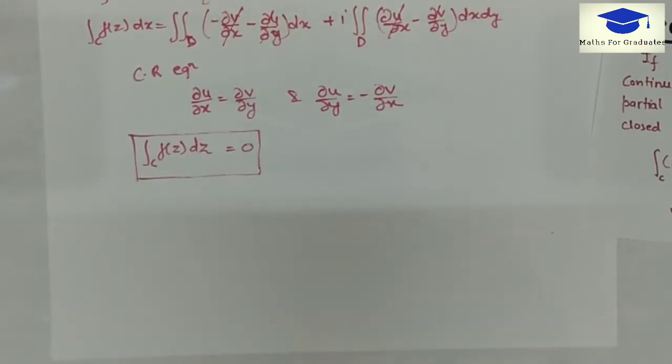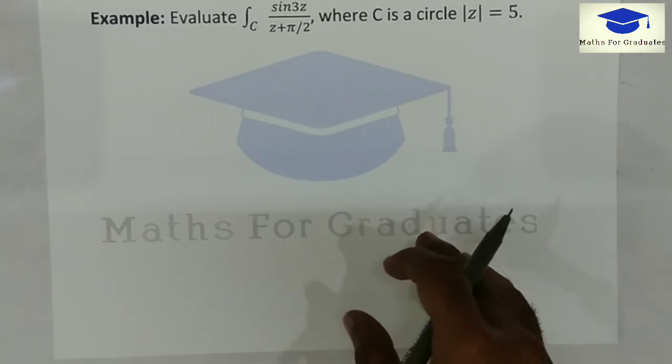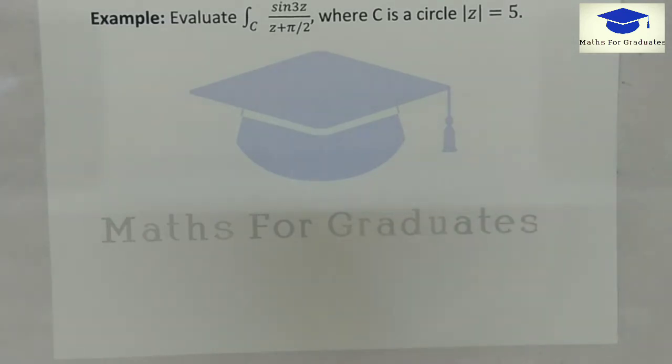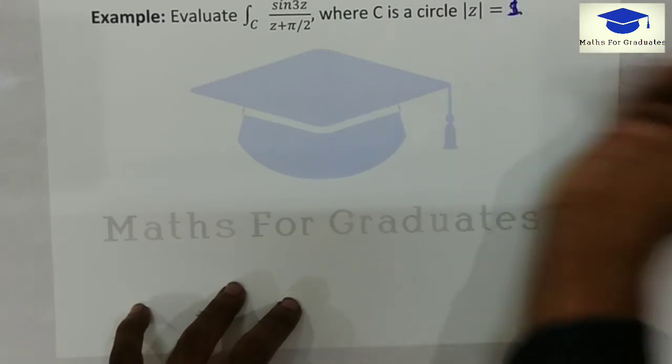Now, let's evaluate a question based on this theorem. We have given here, integration of sin 3z over z plus pi by 2 in a contour, mod of z equals 1.